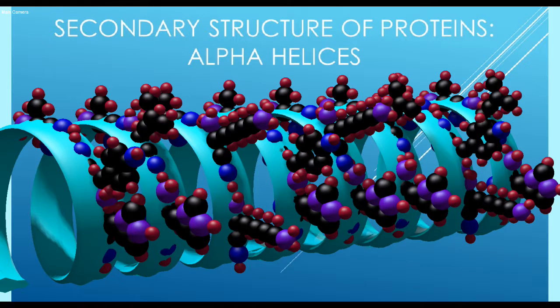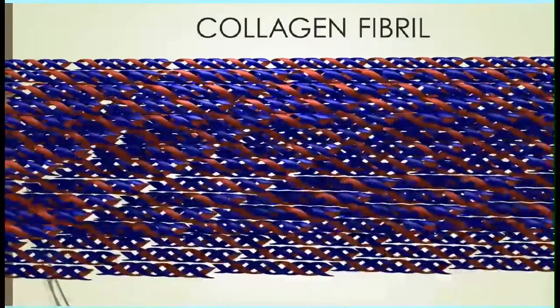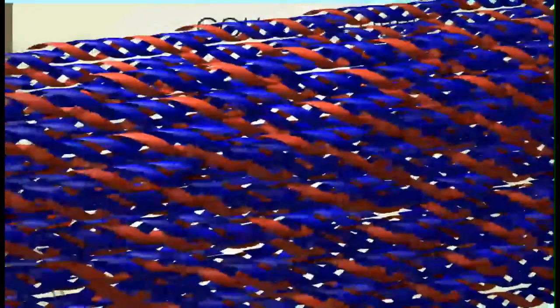Alpha helices allow the R groups to face outwards, and so many proteins are helical, or at least have helical sections.